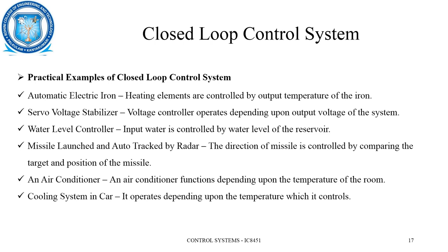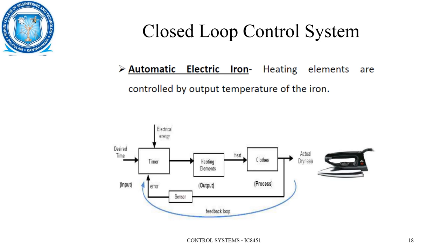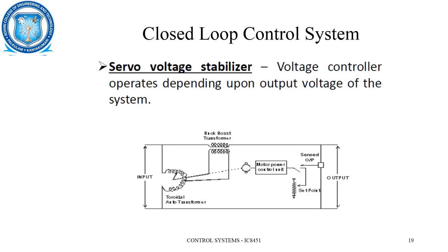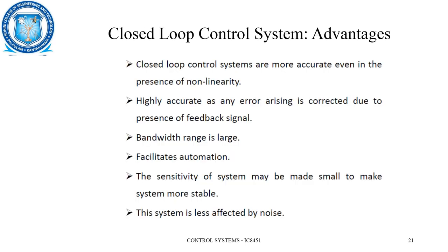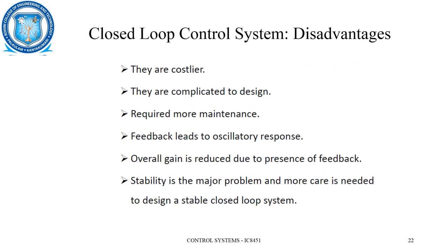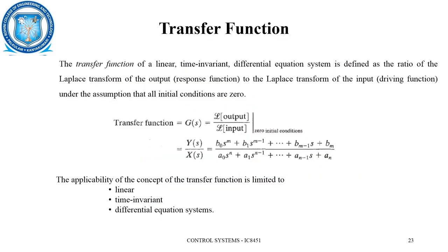Additional closed loop examples include a missile launched and auto-tracked by radar, an air conditioner system, and the cooling system in a car.